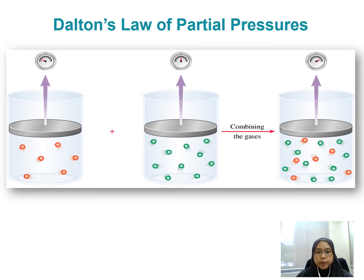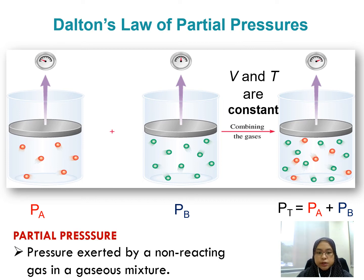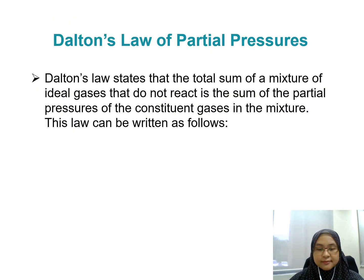Let's move to Dalton's law of partial pressure. If we have gas A with partial pressure PA and gas B with partial pressure PB, the total pressure will be Pt equals to PA plus PB. This is called Dalton's law of partial pressure. Partial pressure is the pressure exerted by a non-reacting gas in a gaseous mixture. Dalton's law states that the total pressure of a mixture of ideal gases that do not react is the sum of the partial pressures of the constituent gases.